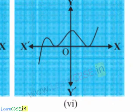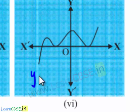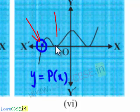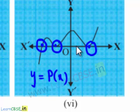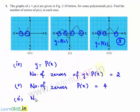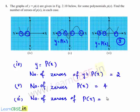Coming to the sixth case, the graph y equal to p of x is intersecting the x-axis at this point, this point, and this point. So the number of points at which the polynomial intersects the x-axis are 3. Therefore, the number of zeros of the polynomial p of x is equal to 3.